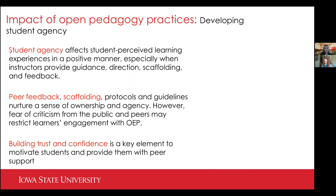Student agency is an important outcome here because this affects students' perceived learning experiences in a positive manner — especially when you give guidance, directions, scaffolding, and feedback. But there were some challenges: students had some fears of criticism from the public and peers, and they may not necessarily know how to give peer feedback, which can restrict their engagement with the processes. That's why there has to be a lot of activities around building trust, confidence, and motivation to provide students with support.